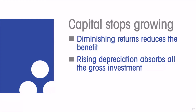Think of it this way: if you have a one-room house and you save a certain amount of money, that amount might be enough to add a second room. But if you have a 20-room mansion, that same amount of money will be used up entirely by repairing and replacing parts of that 20-room mansion, and there's nothing left over to add yet another room. As capital grows, more and more of your gross investment ends up being devoted to replacement, repairs, maintenance, and depreciation.